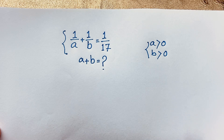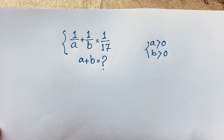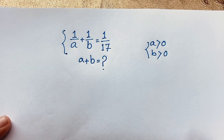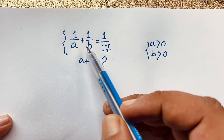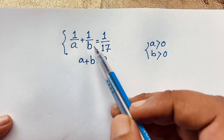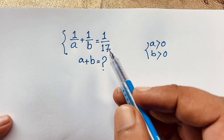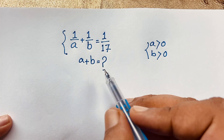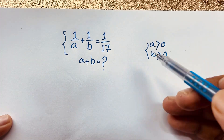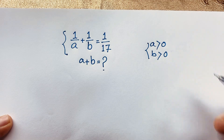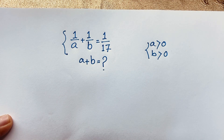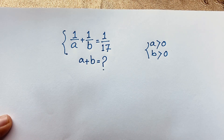Hello everyone, welcome to Rasha's Classroom. Today we have solved an interesting algebraic expression: 1 over A plus 1 over B is equal to 1 over 17. A plus B is equal to what? Here A is greater than 0 and B is greater than 0. How to solve this interesting math problem?